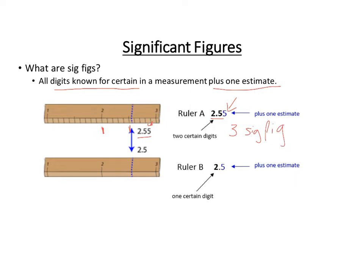Down here on ruler B, you can see that you know you're between 2 and 3, but since there are no more little dash marks, it's not quite as certain exactly what that second number is. So we just guesstimate it's around 0.5. We know the 2 for sure, and then the estimate is 0.5 — so in this case we have two significant figures.